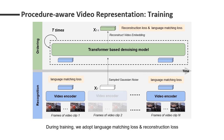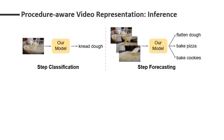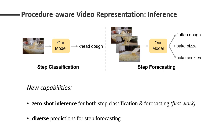During training, we use language matching loss on both the video encoder and diffusion model, and attach the reconstruction loss on the diffusion model. During inference, our video encoder can be used for step classification. When doing step forecasting, our diffusion model can output diverse predictions for the next step. Note that our method enables two new capabilities: zero-shot inference and diverse step forecasting.